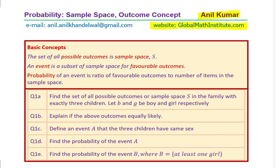In this video we will discuss probability, sample space, and outcomes, and we will try to understand what are the concepts which connect these things. The basic concepts are: the set of all possible outcomes is the sample space, normally written with capital S. An event is a subset of sample space for favourable outcomes. Probability of an event is the ratio of favourable outcomes to the number of items in the sample space. We could have experimental or theoretical probabilities.